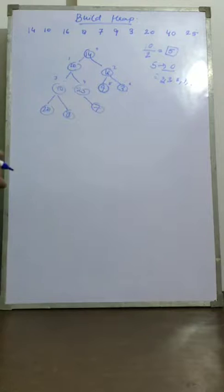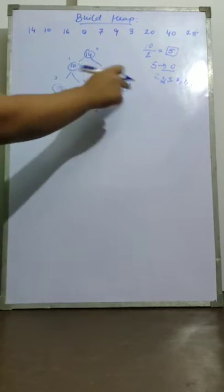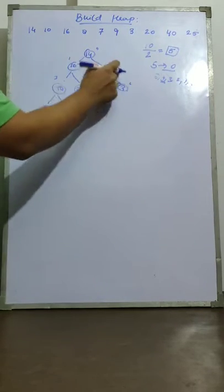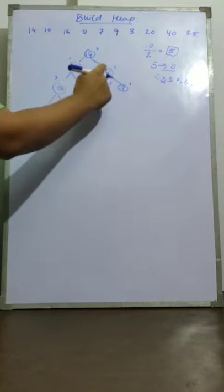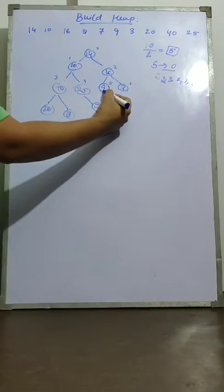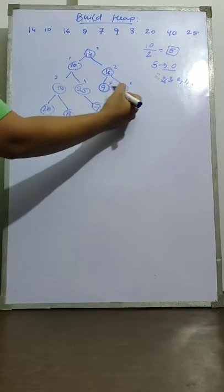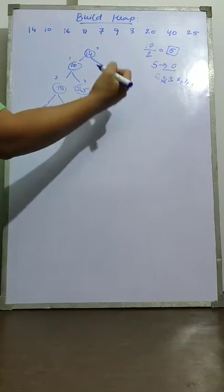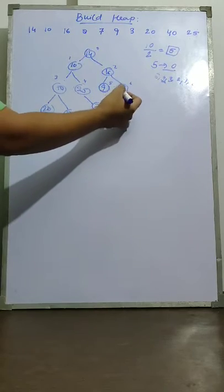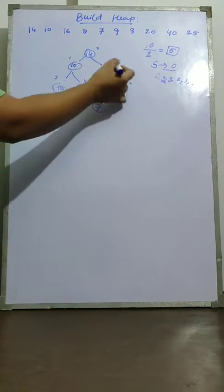Now I reach index 2. I check: is 16 satisfying the max heap property? Yes — 16 is bigger than both its children. So this is already a max heap.